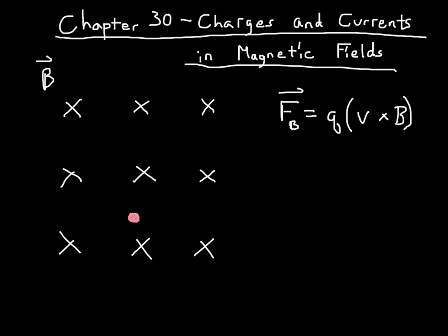I'm going to take a charge and put it inside of this field and give it some velocity so that it's moving towards the right. So we have some velocity in this magnetic field, and because the charge is moving inside of a magnetic field, it's going to feel a force. That force is going to be a magnetic force equal to q, whatever the magnitude of the charge is, times the velocity crossed into the magnetic field.